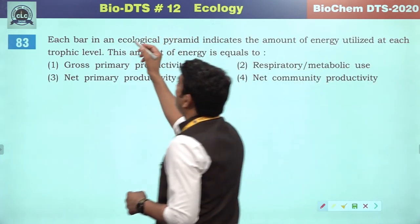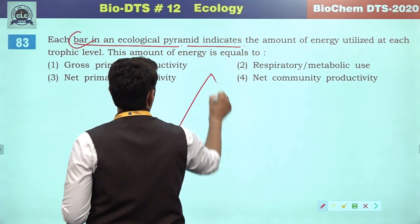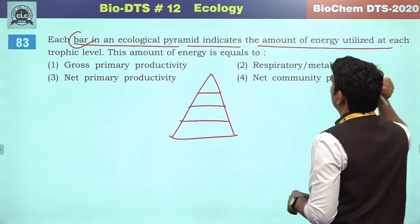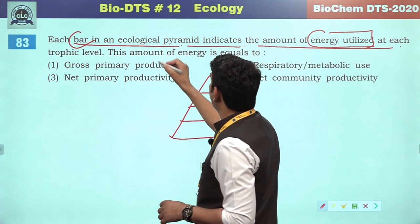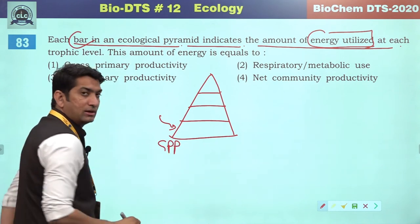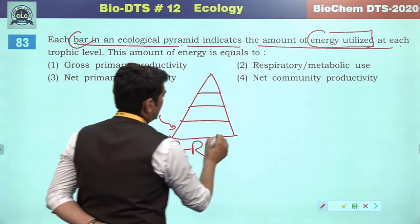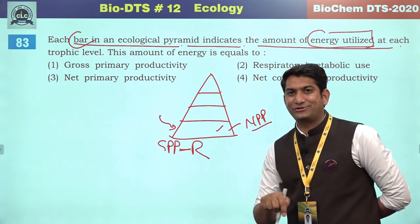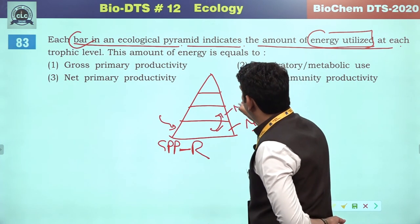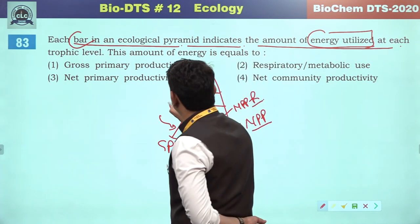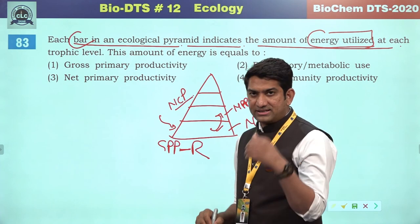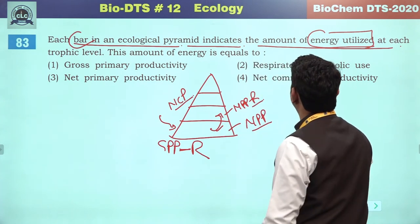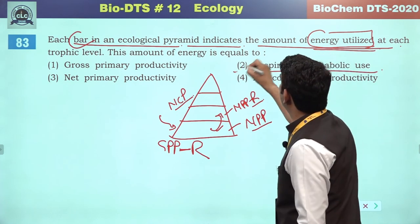Each bar in an ecological pyramid indicates the amount of energy utilized at each trophic level. At the first trophic level there is GPP (gross primary productivity), minus R for metabolic use — giving NPP (net primary productivity), which is also the transferable biomass. At the next trophic level, NCP productivity is transferred. Each trophic level requires a definite input of energy — energy utilized refers to respiratory or metabolic use.